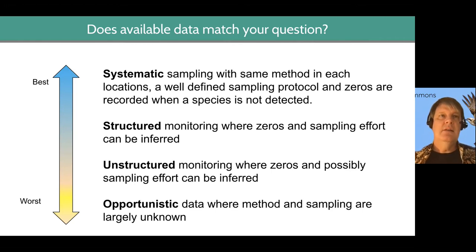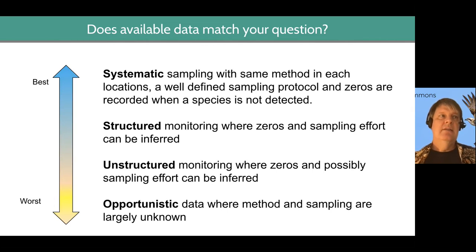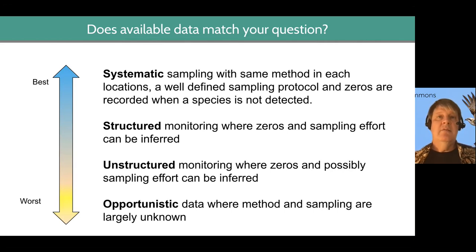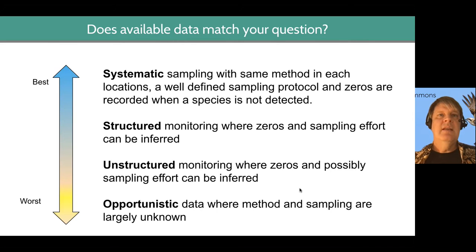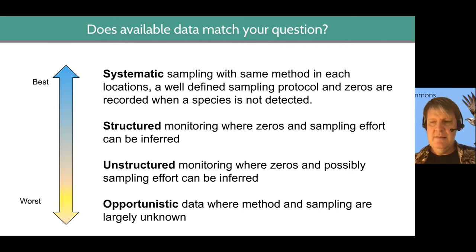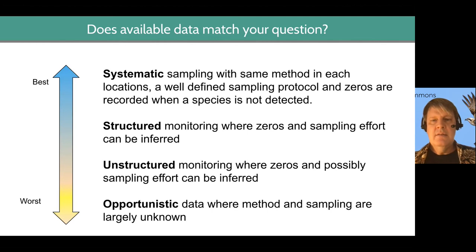So if you have highly systematically collected data — where every time you didn't run into your target species you recorded a zero, and your sampling was representative of both geographic and environmental space, and you did the same thing every time a survey was done — boy, you're in rare, rare air. But biodiversity data that has been systematically collected just doesn't exist across the globe. In fact, there's a lot of taxa that we don't even have named yet, let alone have systematic occurrence data available for them.